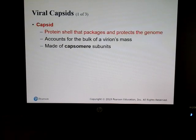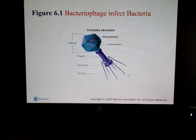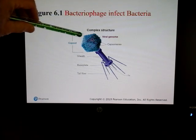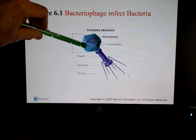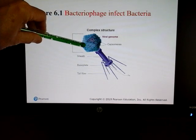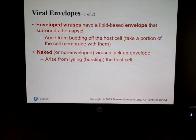A capsid is a protein shell that packages and protects the genome. If we look at this bacteriophage — again, a virus that infects bacteria — it's pretty complex. The outer capsid on the outside is made of protein, and we call those capsomers. Inside you actually have the DNA or RNA of the virus.